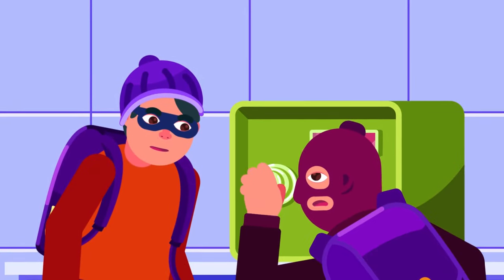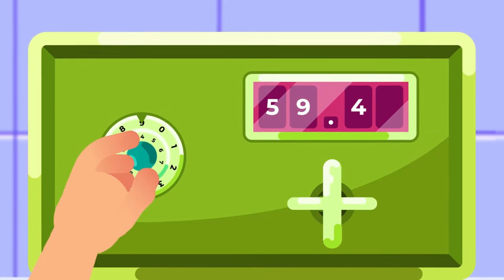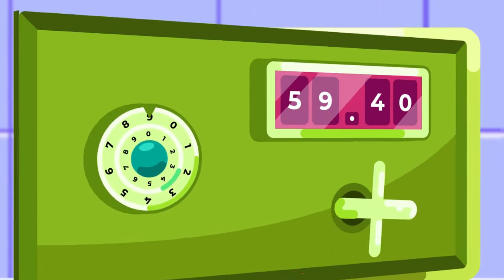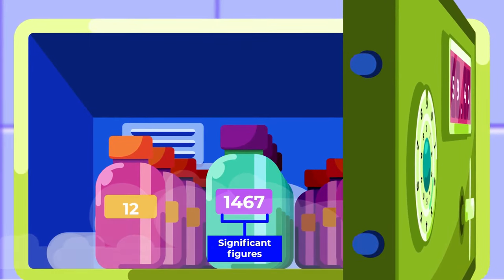There are several rules to identify a significant figure. Number 1: Non-zero digits are always significant. For example, 12 has two significant figures and 1467 has 4.